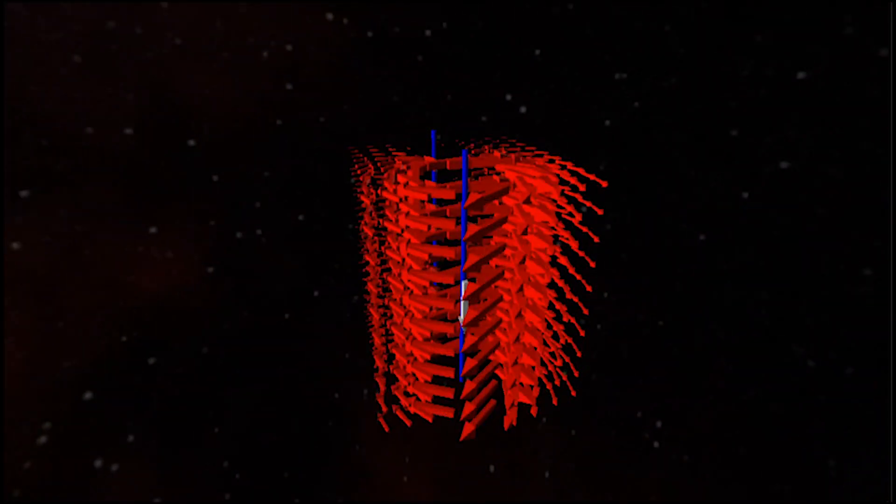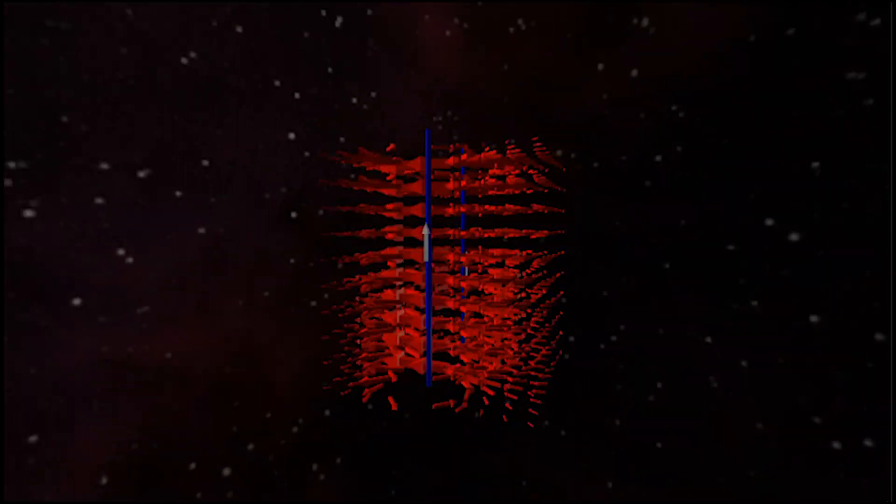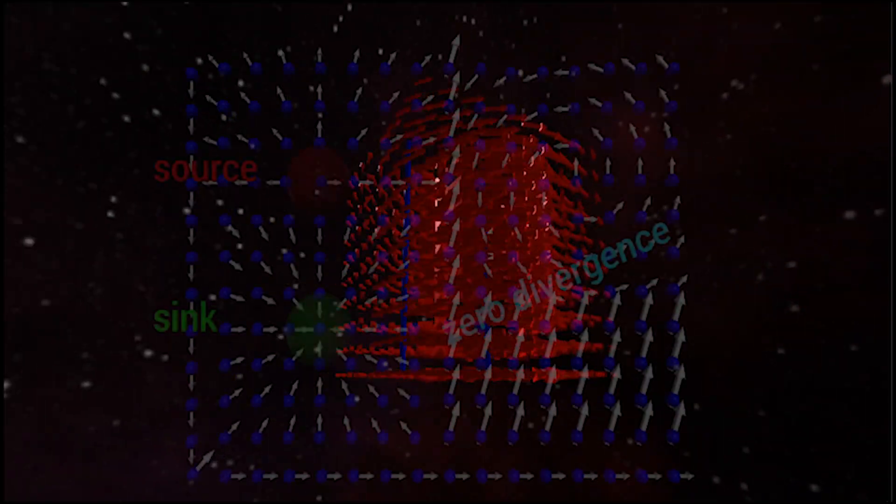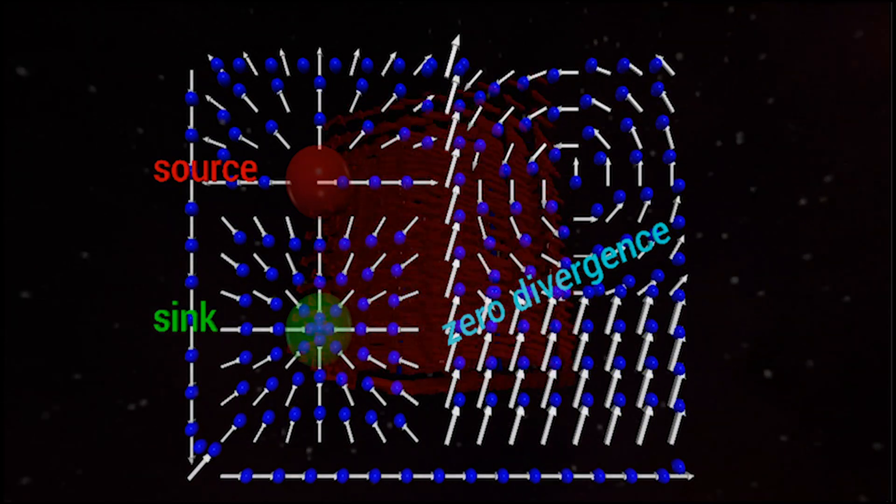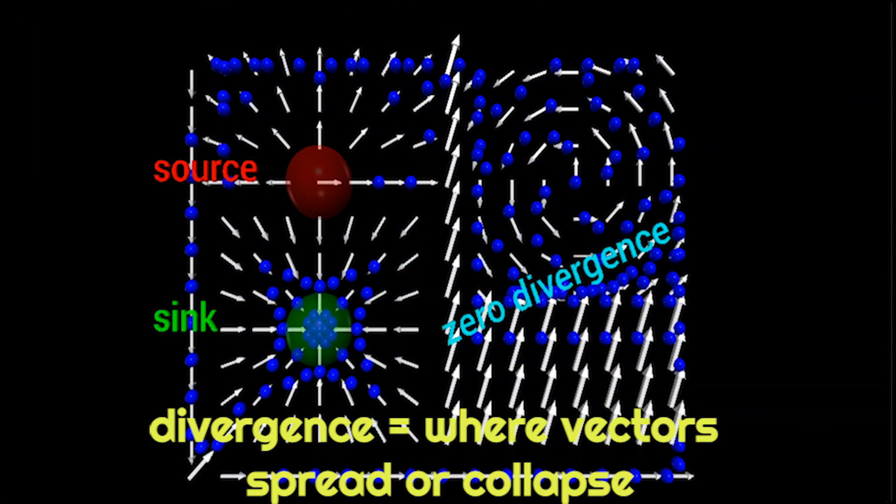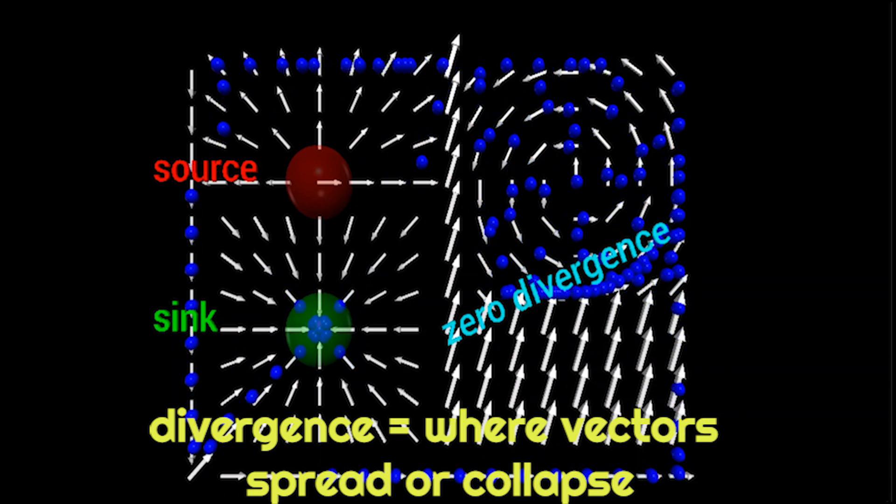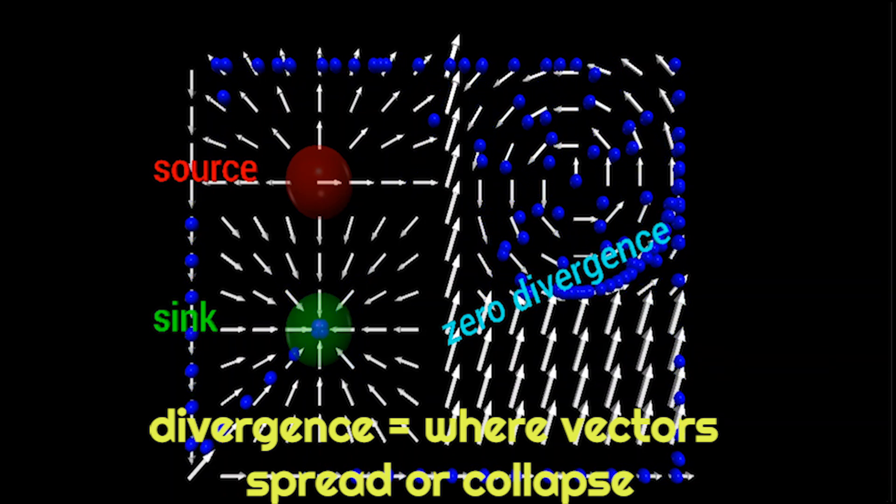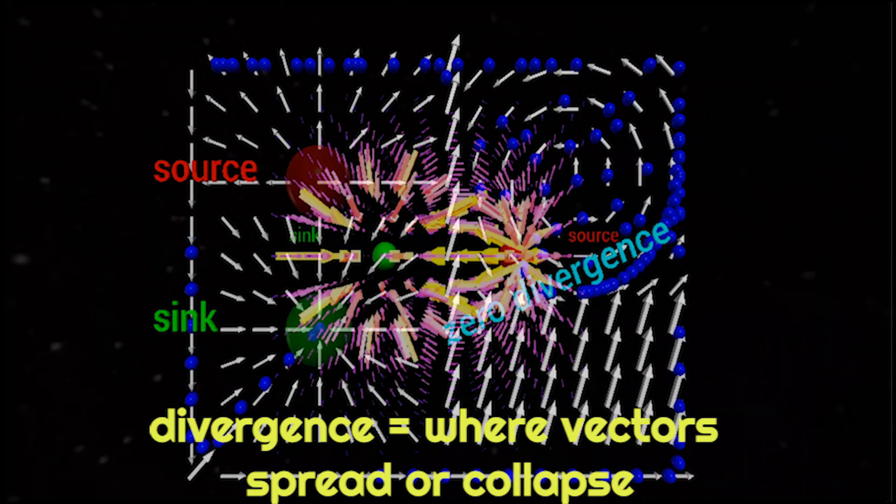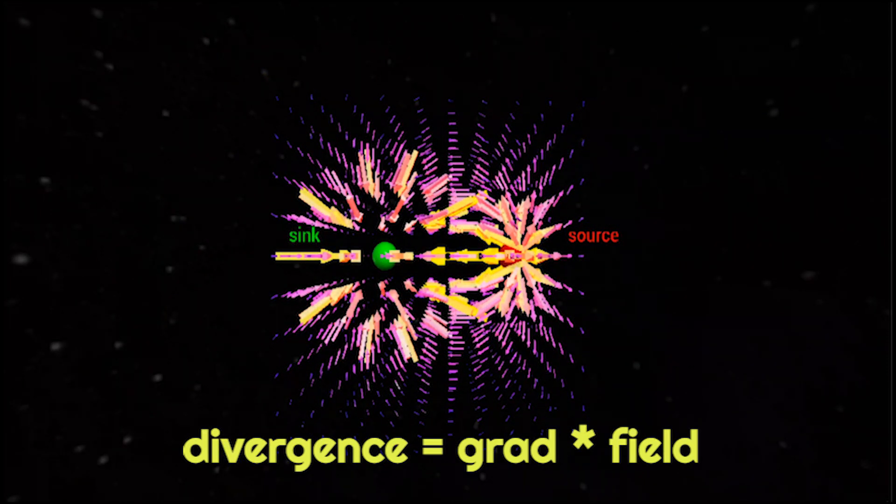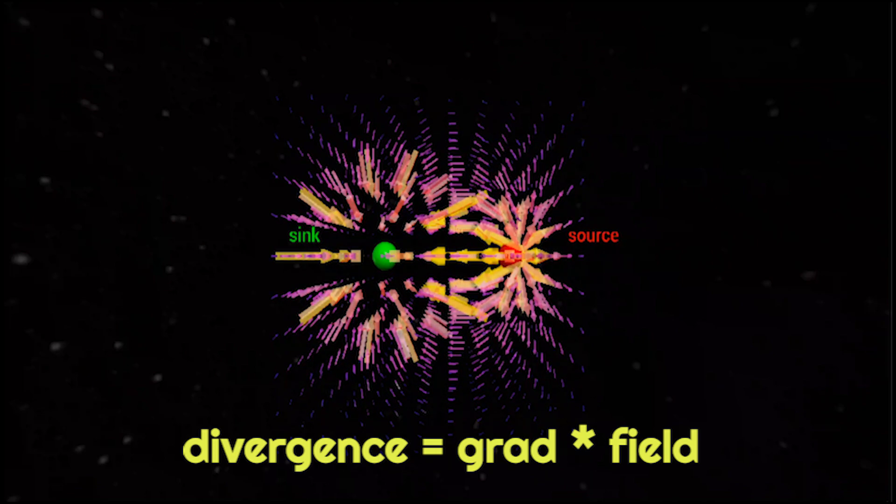One of the properties of a vector field that we want to study is the divergence. The divergence is a type of derivative that tells you where the vectors are spreading out or collapsing together. In our water flow example divergence would tell you where the water is being poured in or being poured out. For the electric dipole the divergence tells you where the charges are located. Divergence is calculated as the dot product between the gradient and the vector field.